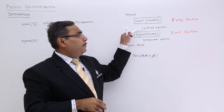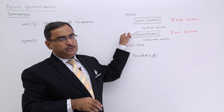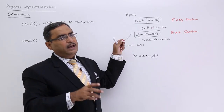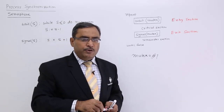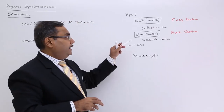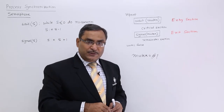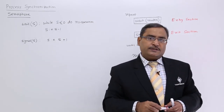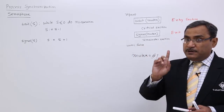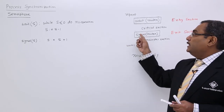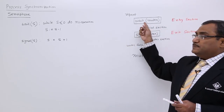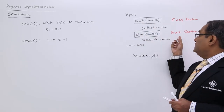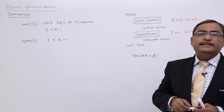Now P1 enters the critical section and has its execution. When P1 leaves, it again executes signal(mutex), making mutex = mutex + 1. As a result, another process can then enter the critical section. So the entry section has been replaced by wait(mutex) and the exit section has been replaced by signal(mutex).